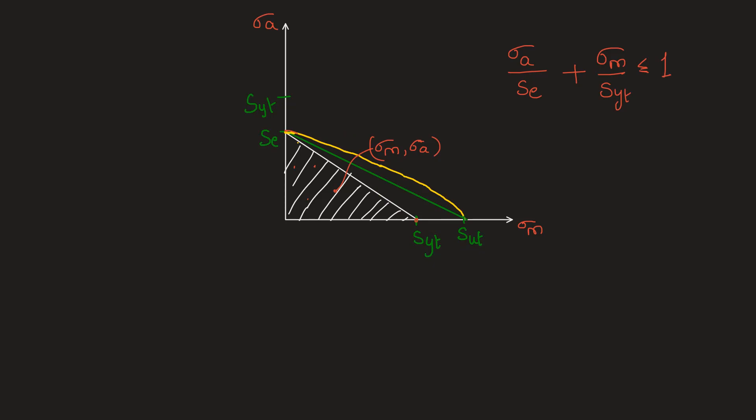So we see that this is Soderberg's line, this is Goodman's line, and this parabola gives Gerber's criteria or Gerber's parabola. We see that all other criteria are estimating more strength than Soderberg's criteria, and so Soderberg's criterion is the most conservative one.